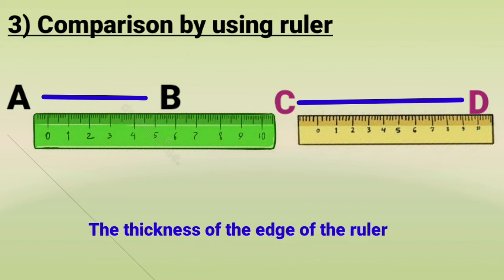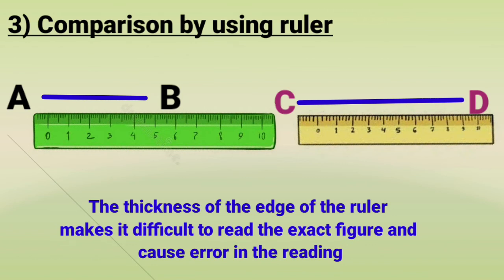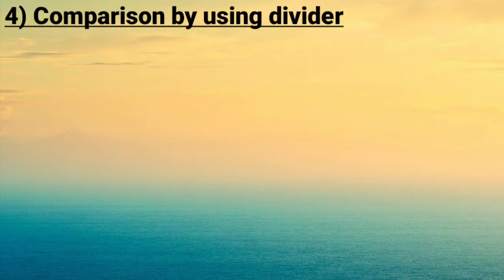But sometimes the thickness of the edge of the ruler makes it difficult to read the exact figure and causes error in the reading. Sometimes the edge of the scale is also broken.